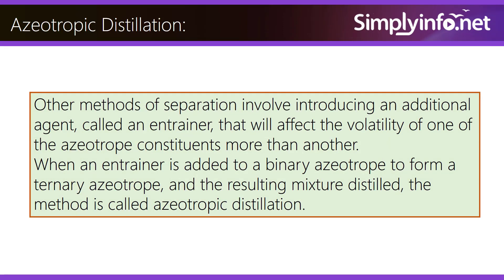Other separation methods involve introducing an additional agent called an entrainer that affects the volatility of one constituent more than another. When an entrainer is added to a binary azeotrope to form a ternary azeotrope and the mixture is distilled, the method is called azeotropic distillation.